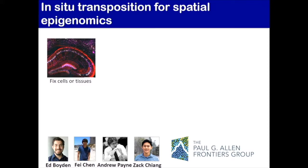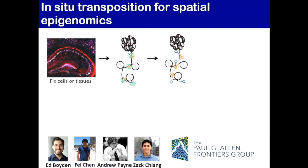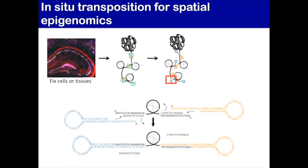We take fixed cells or tissues, wash in TN5 transposase, which binds open chromatin and inserts sequencing adapters. We add circular pieces of DNA — dumbbell-like adapters with complementary ends — ligate them into the 5-prime ends of the adapters that TN5 inserted, and end up with one long continuous piece of DNA. We add a primer and a polymerase to copy round and round, generating focally amplified pieces of DNA representing about 1,000 copies or more of individual regulatory elements in situ.